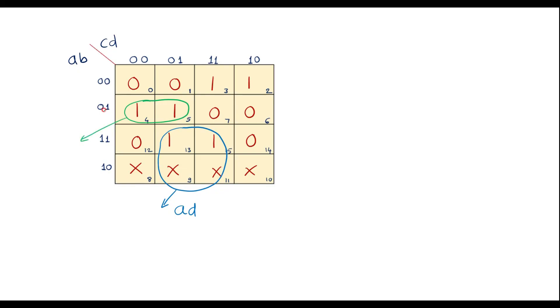Here its value is, it covers the row a bar b, that is a bar b. Here the common term is c, that is 0 which is c bar because it is 0.